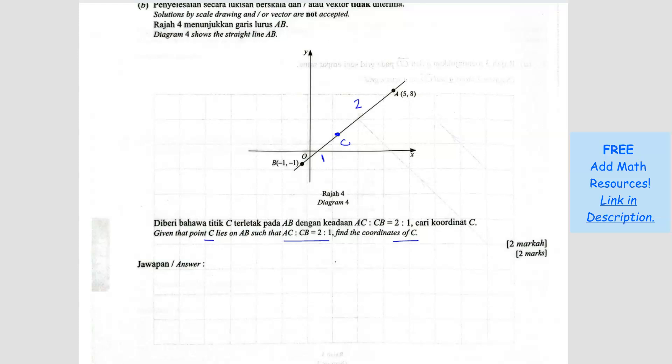So if you're finding for the coordinate C, we can use the formula. The formula is what? We want to find, let's say C is X and Y. So to find X, what we can do? So the formula is what?